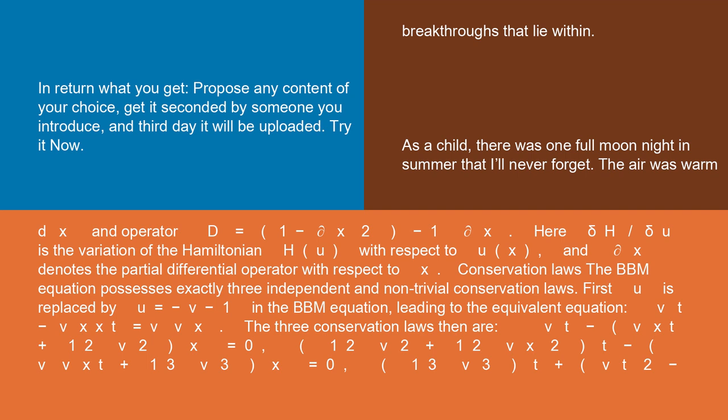Conservation laws: the BBM equation possesses exactly three independent and non-trivial conservation laws. First, u is replaced by u = -v - 1 in the BBM equation, leading to the equivalent equation v_t - v_xxt = v*v_x.